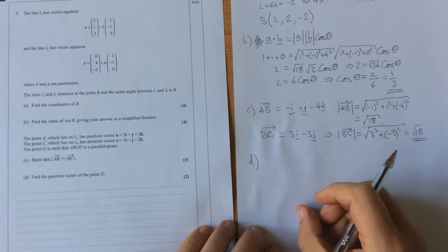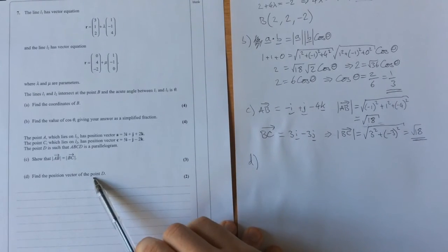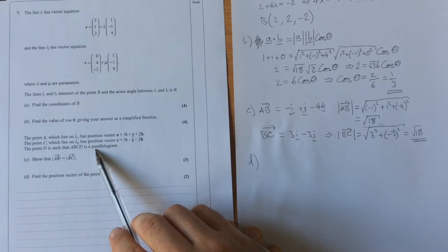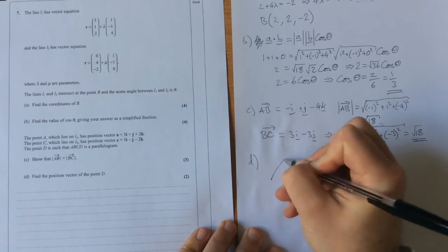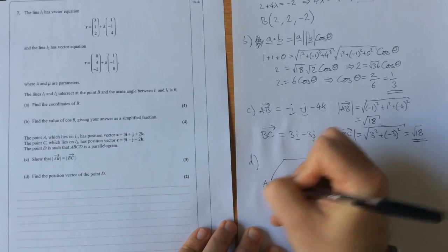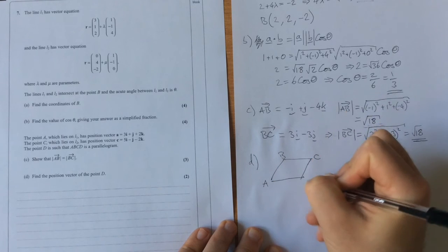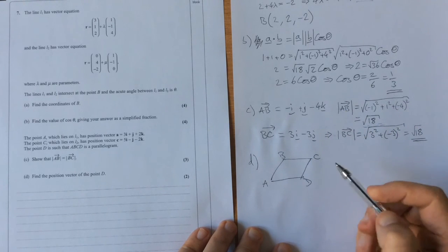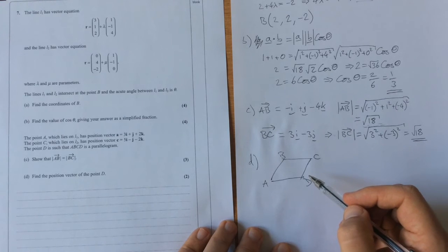Now for part d, find the position vector of the point d. Now we're told that a, b, c, d is a parallelogram, and we know ab is equal to bc, so if we draw a parallelogram, which is going to look something like this, a, b, c, d, and we know that ab and bc are the same length. That doesn't really matter too much for this question though.